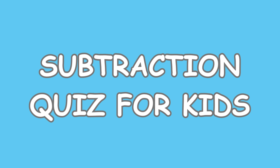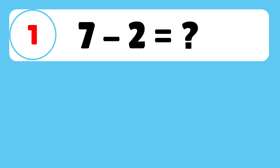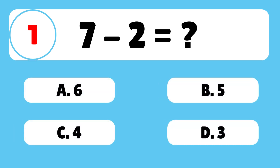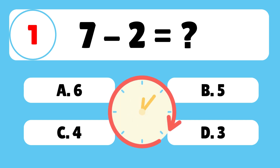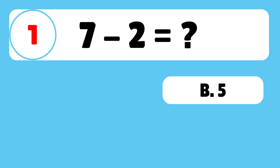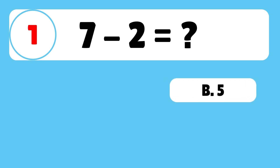Subtraction Math Quiz for Kids. Question 1: What is 7 minus 2? The answer is B. 7 minus 2 is equal to 5.